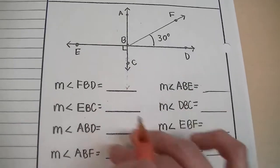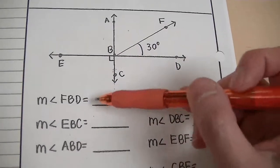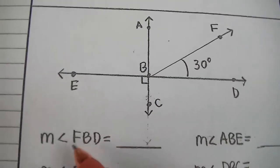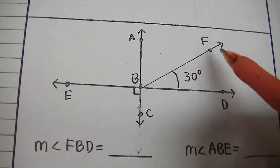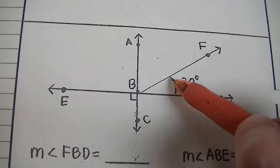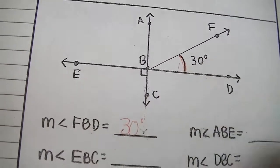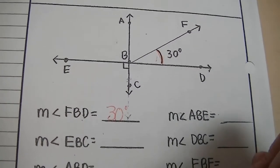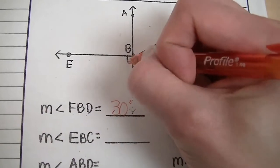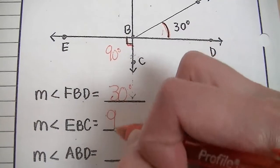The next problem has a lot going on — there's a lot to find, and you can go in any order. We'll go in an order that hopefully makes sense. Let's start with the measurement of angle FBD: F, B is the vertex, D — and it's given, so that's 30 degrees. Next, the measurement of angle EBC — that box indicates 90 degrees, so that's 90 degrees.